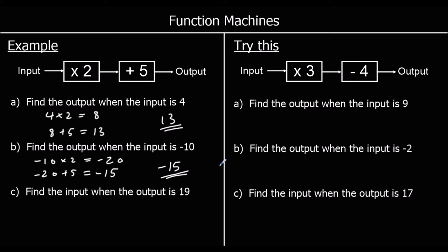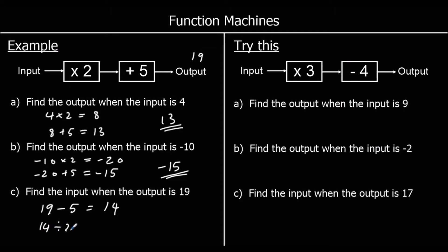Part C says find the input when the output is 19. So 19 is coming out of the machine — what went in? We can go backwards. So if we're going backwards, we're going to do the opposite of plussing 5, which is taking away 5. So 19 take away 5 is 14. And then we're going to do the opposite of timesing by 2, which is dividing by 2. So 14 divided by 2 is 7. So the input must have been 7.